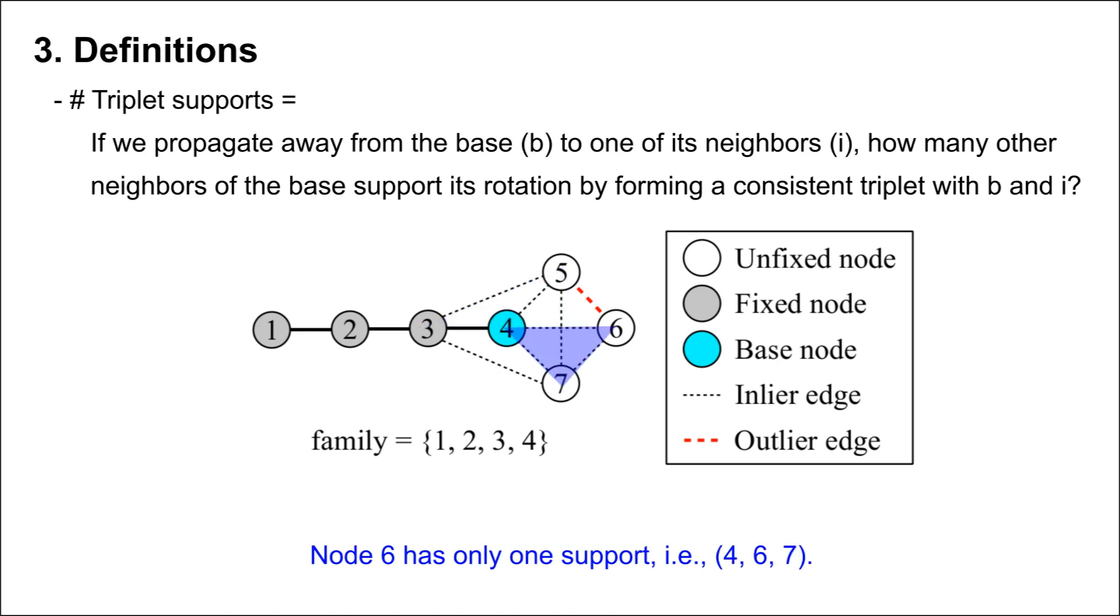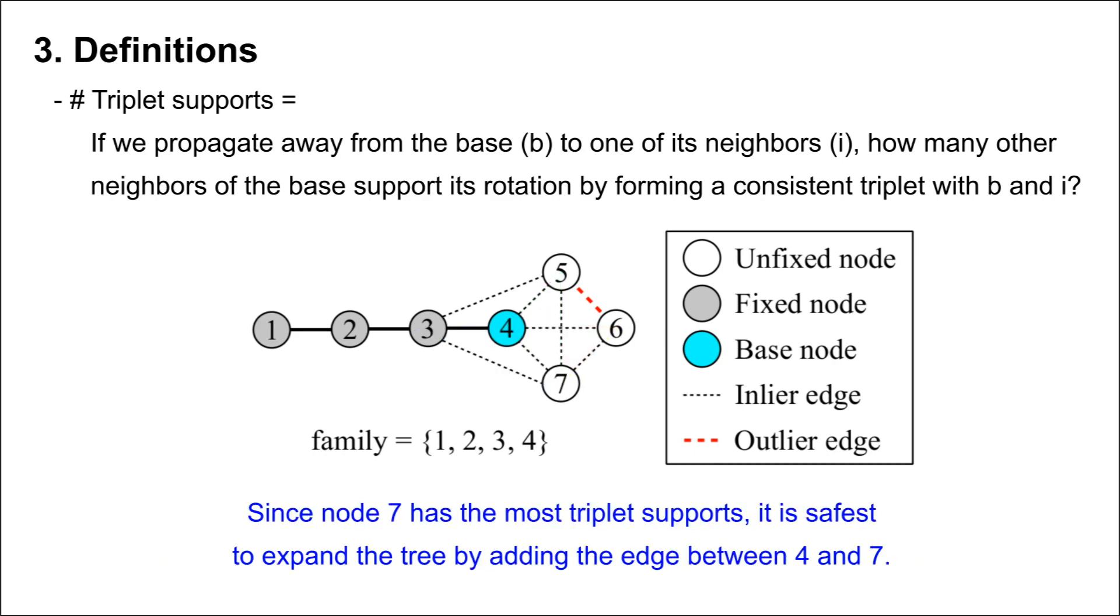Node 6 has only one support: 4, 6, 7. And node 7 has three supports: 3, 4, 7; 4, 5, 7; and 4, 6, 7. Since node 7 has the most triplet supports, it is safest to expand the tree by adding the edge between 4 and 7.